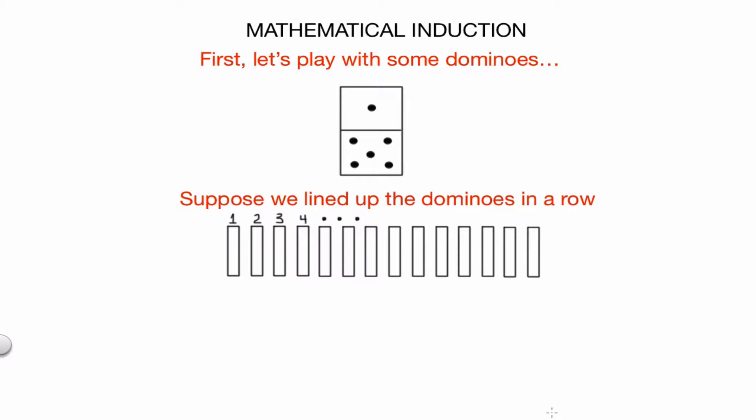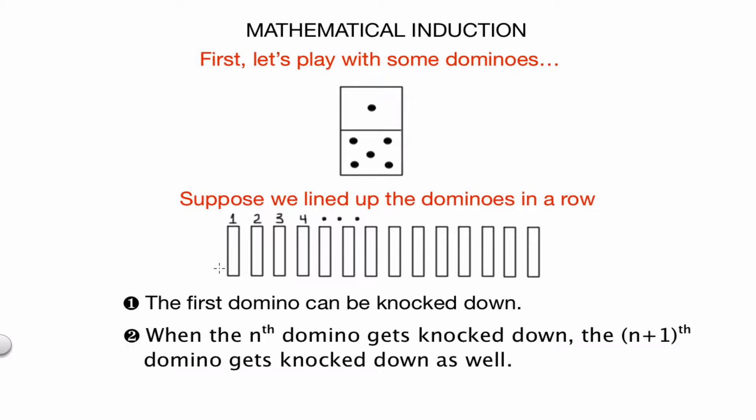Now suppose I told you two things. First, I told you that the domino in the first position can be knocked down. And second, I told you that when the nth domino gets knocked down, the one in the (n+1)th position will get knocked down as well. This second condition says that if a domino in the nth position gets knocked down, then the domino right next to it in the (n+1)th position will get knocked down as well. With these two conditions, can we guarantee that all the dominoes in this row will get knocked down, even if there are an infinite number of dominoes?